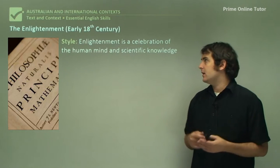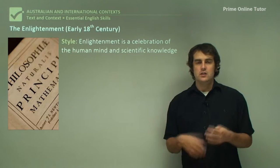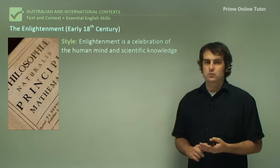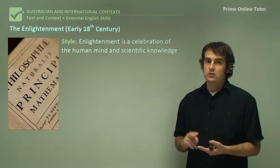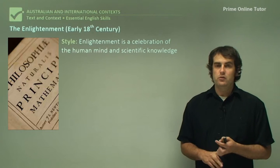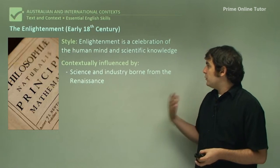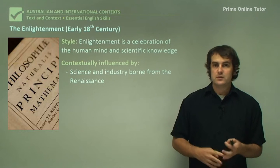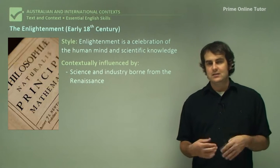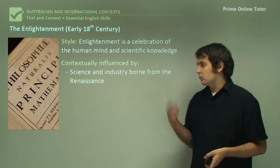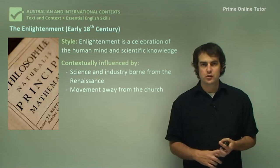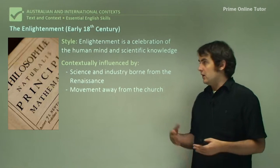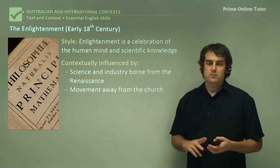Moving on from there, we go into the Enlightenment. The Enlightenment is basically a celebration of scientific knowledge and the power of the human mind. This was about the time that Isaac Newton was coming into prominence, and a lot of texts started to embrace science and the new discoveries about the laws of nature and physics. It was contextually influenced by science and industry born from the Renaissance — a continuation of the emphasis on technology. It was also a movement away from the church, giving new writers an excuse to move away from church values.